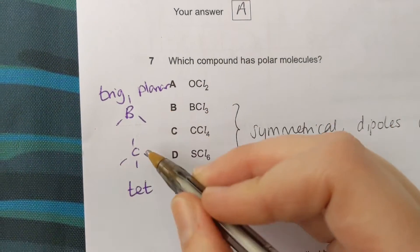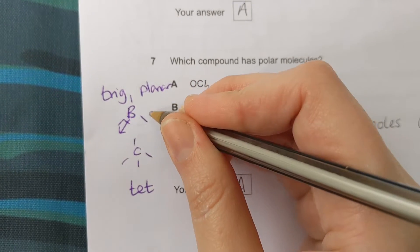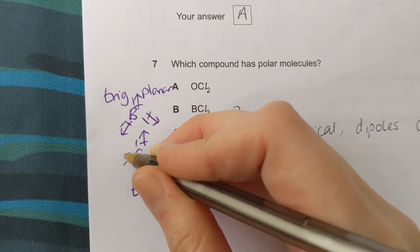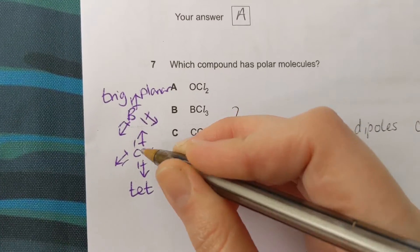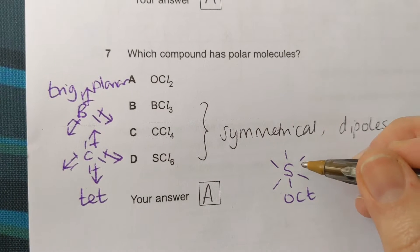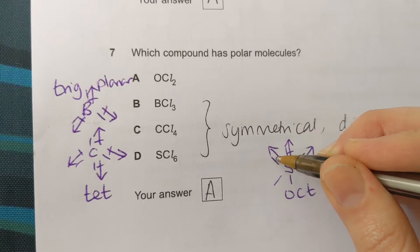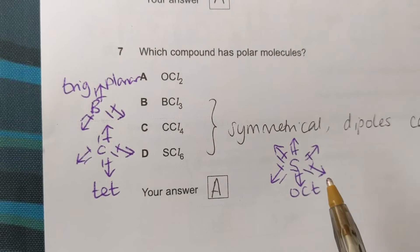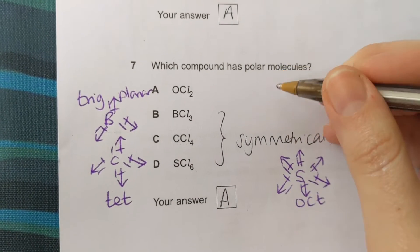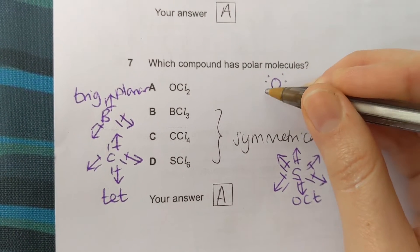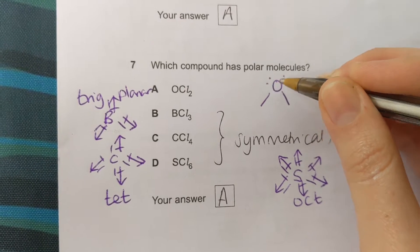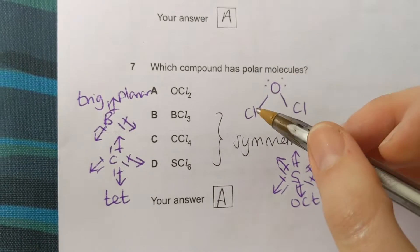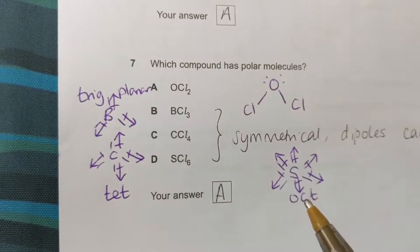And each of these bonds is polar, so we can annotate the dipoles on. The dipole points towards a more electronegative atom. And in these three molecules, the dipoles are pointing in all different directions because the molecules are symmetrical, and that means the dipoles cancel out. So the molecule might have polar bonds, but the molecule itself isn't polar because the dipoles cancel because of this symmetry. Whereas this one, the oxygen, the lone pairs, these lone electrons are pushing down these bonding pairs like this. This molecule is unsymmetrical. The dipoles don't cancel. So this one, A, has polar molecules.